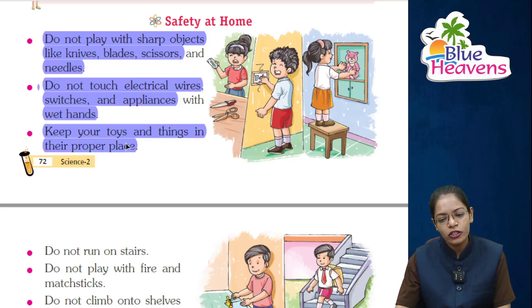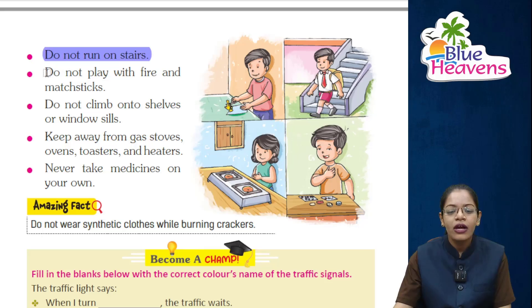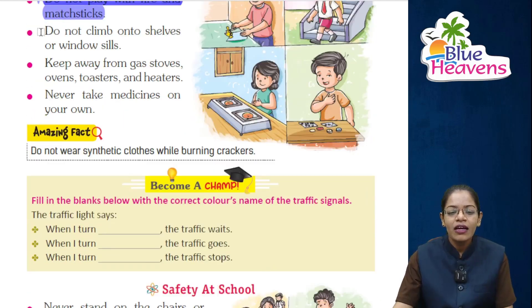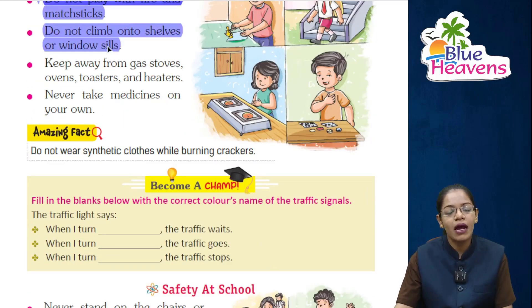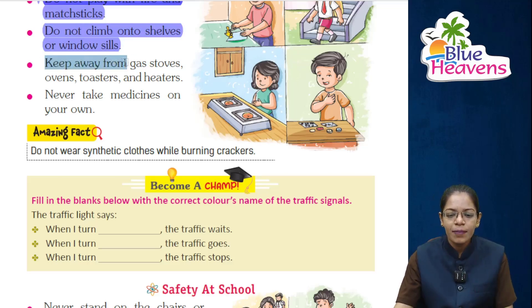Do not run on stairs. Do not play with fire and matchsticks. Do not climb onto shelves — kitchen shelves or slabs. Keep away from gas stoves, ovens, toasters, and heaters — all electrical appliances in your kitchen.